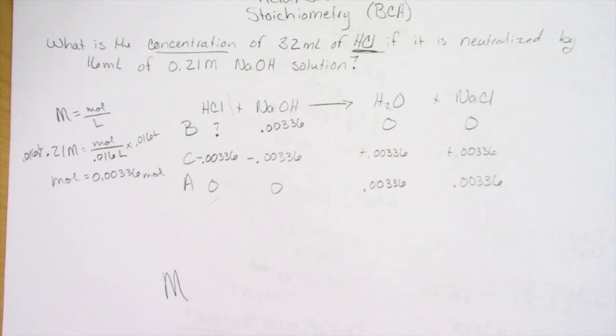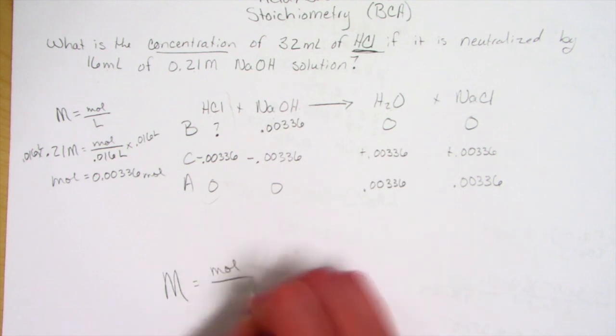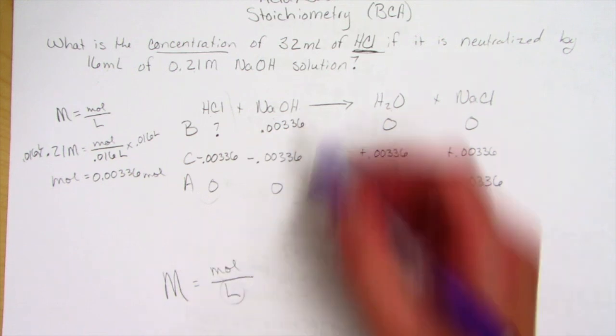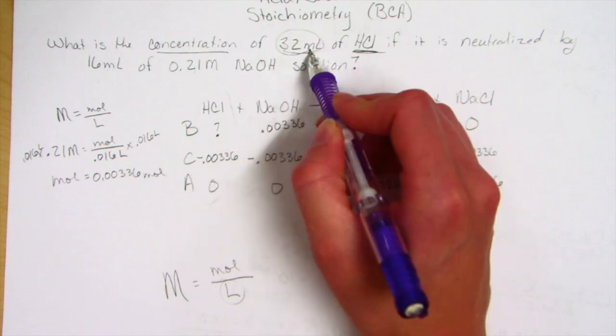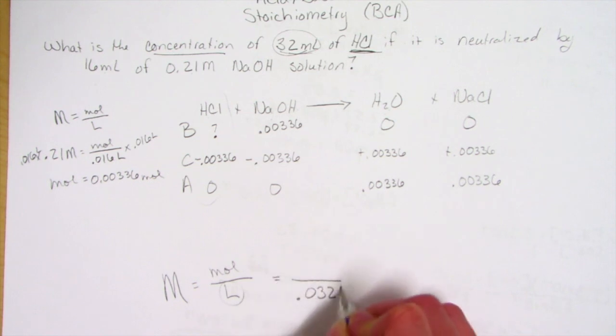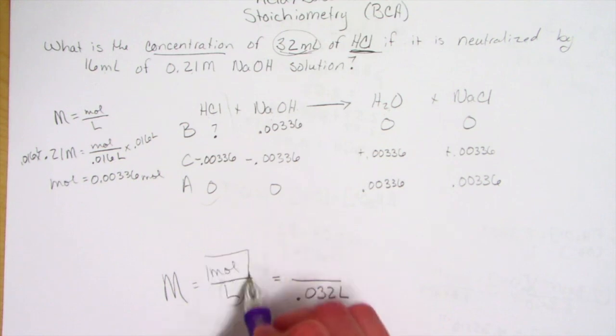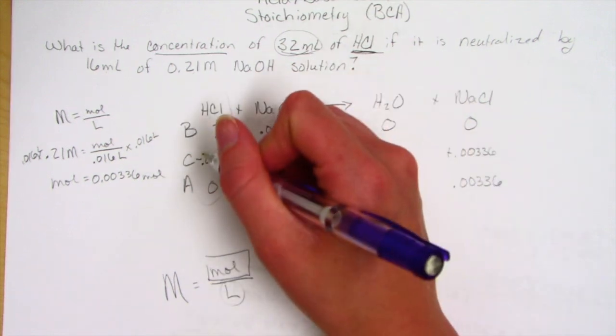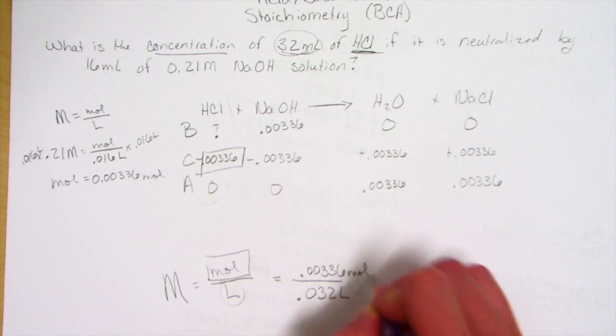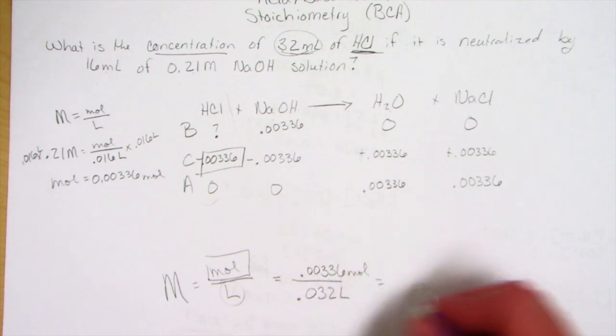Now we want to know the concentration, the molarity of our HCl, and we know that equals moles over liters. We know that our liters comes from this 32 milliliters up here. Again, that's in milliliters, so we have to convert it. We're going to use 0.032 liters. The moles come from the amount that we used.